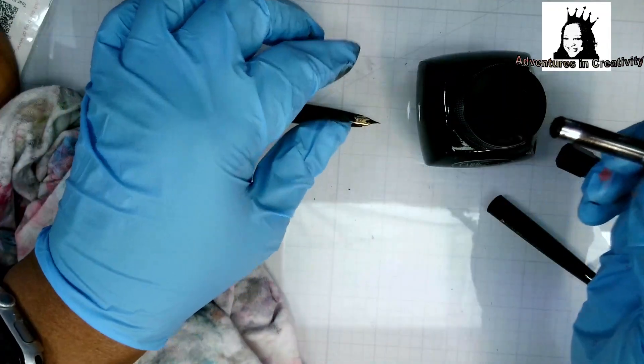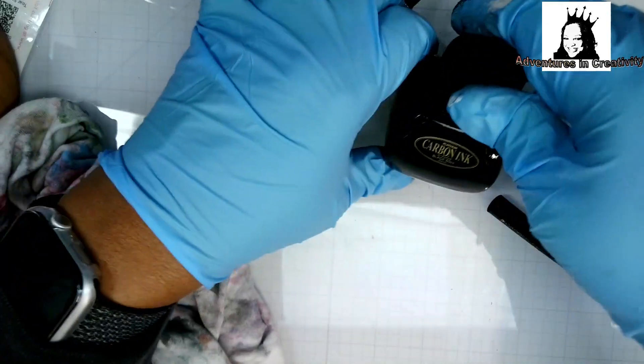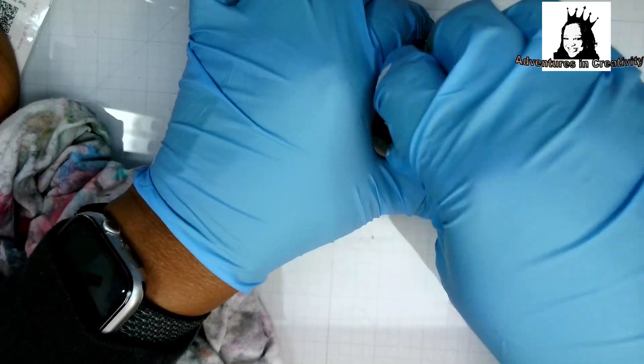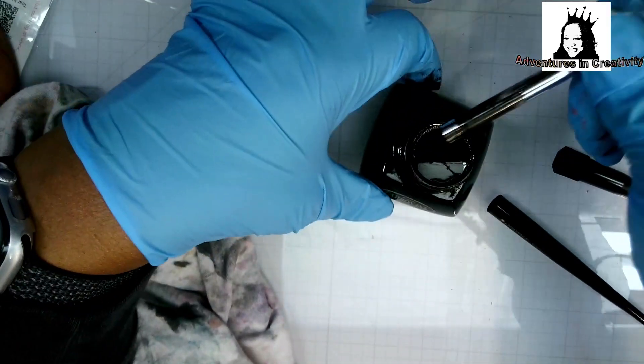This is a converter, it's in the down position. Grab my ink, got the platinum carbon ink here, I gave it a shake, and then it's so easy.